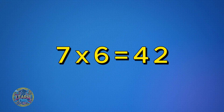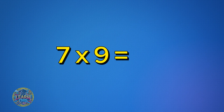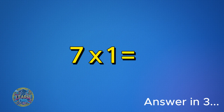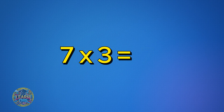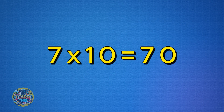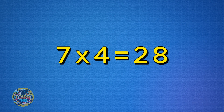Seven times six is 42. Seven times eleven is 77. Seven times nine is 63. Seven times one is seven. Seven times three is 21. Seven times ten is 70. Seven times four is 28.